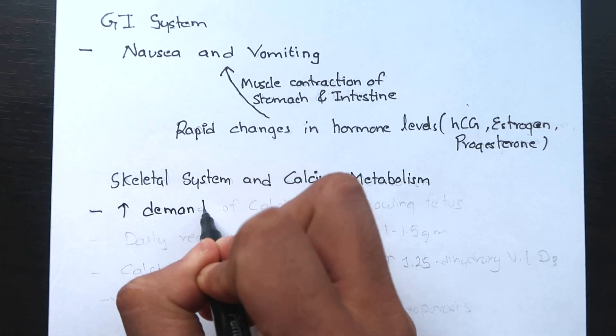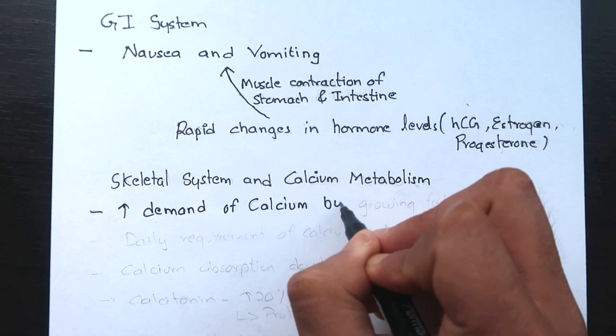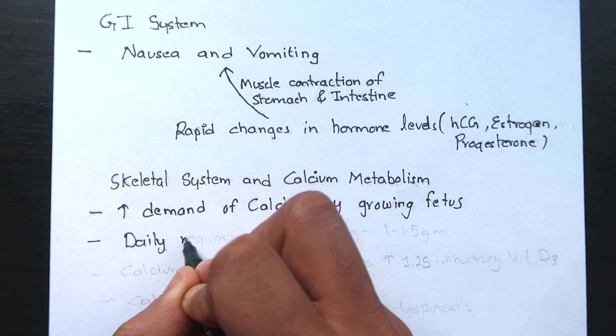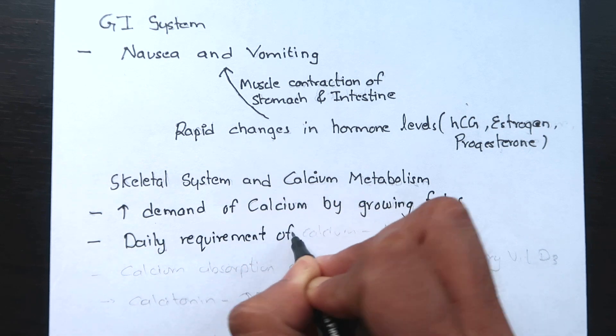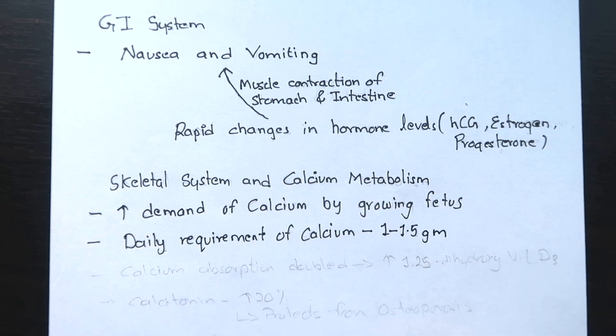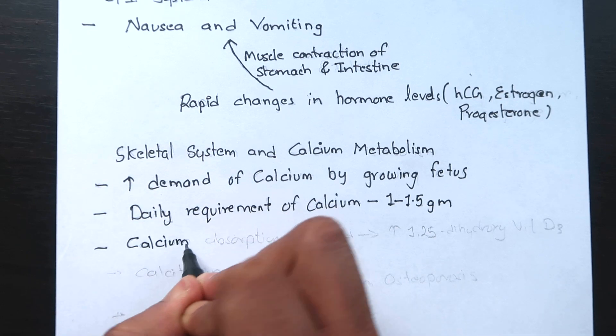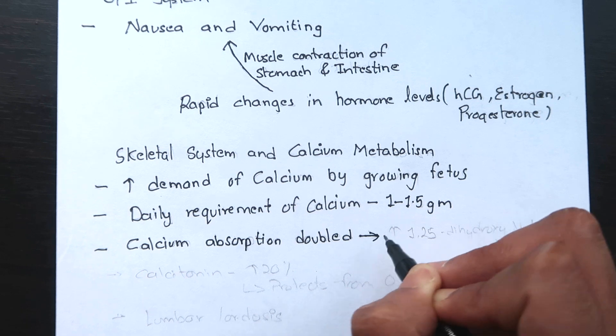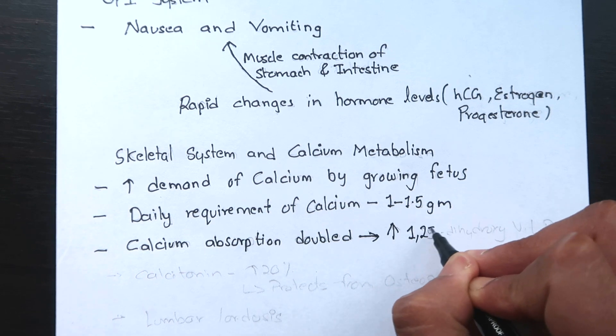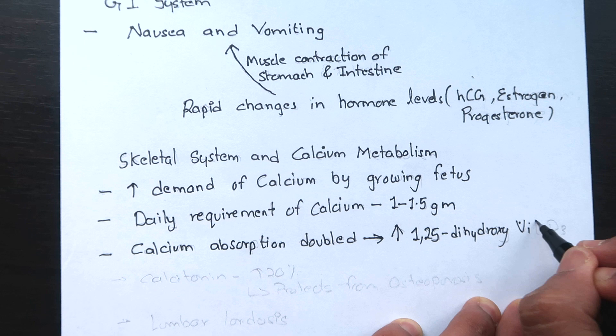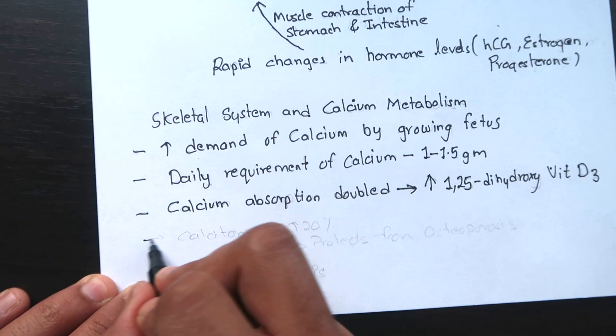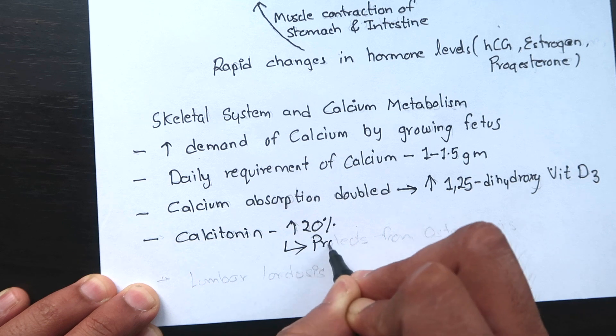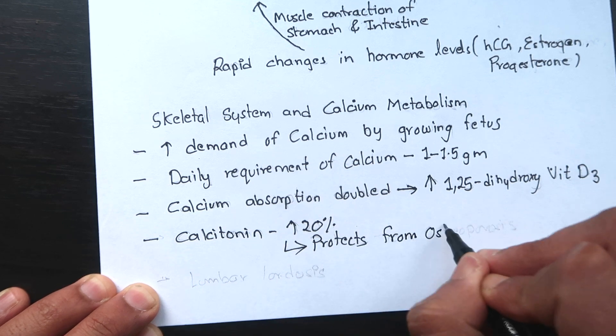During pregnancy, there is increase in the demand of calcium by the growing fetus. Hence, daily requirement of calcium during pregnancy and lactation averages 1 to 1.5 gram. Calcium absorption from intestine and kidneys are doubled due to rise in the level of 1,25-dihydroxyvitamin D3 which is the active form of vitamin D. Calcitonin levels increase by 20% and this protects the maternal skeleton from osteoporosis.